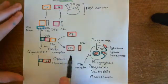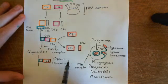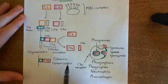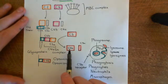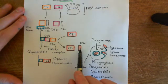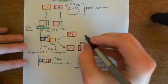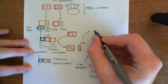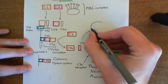C3B then binds onto glycoproteins on the surface of the microbe and will lead to those microbes being more tasty to phagocytes, resulting in the microbe being more likely to be phagocytosed. Now, before looking at the other function of C3B, let's turn our attention to this C3A molecule. C3A is going to diffuse off and basically act on a type of cell that you have all over your body.